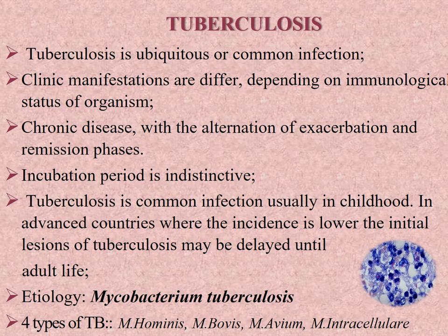Less commonly, an individual catches the infection by the alimentary route, via contaminated food and milk, with localization of the primary tuberculosis focus in the distal part of the ileum. Entry may also occur via skin lesions, oropharynx, tonsils, lymphoid tissue, or placenta. The incubation period is indistinct.